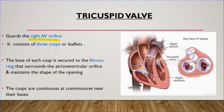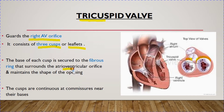The tricuspid valve is present between the right atrium and the right ventricle, making a gateway through which blood will pass. As its name indicates — 'tri-cusp' — it is composed of three cusps or leaflets. The base of each cusp is secured and attached to the fibrous ring, which is the fibrous skeleton of the heart. This fibrous skeleton surrounds the atrioventricular orifice and maintains the shape of the opening.